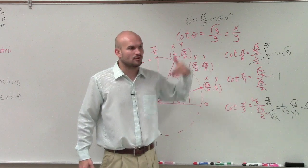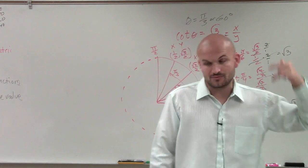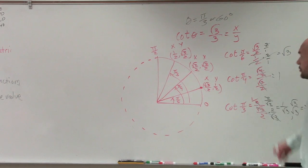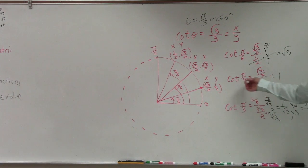Cotangent represents x over y when you have a point on the unit circle. Tangent represents y over x when you have a point on the unit circle. So you're going to have to take these kinds of points and work with them. It's nice when you have a tangent or cotangent that's 1 or negative 1.